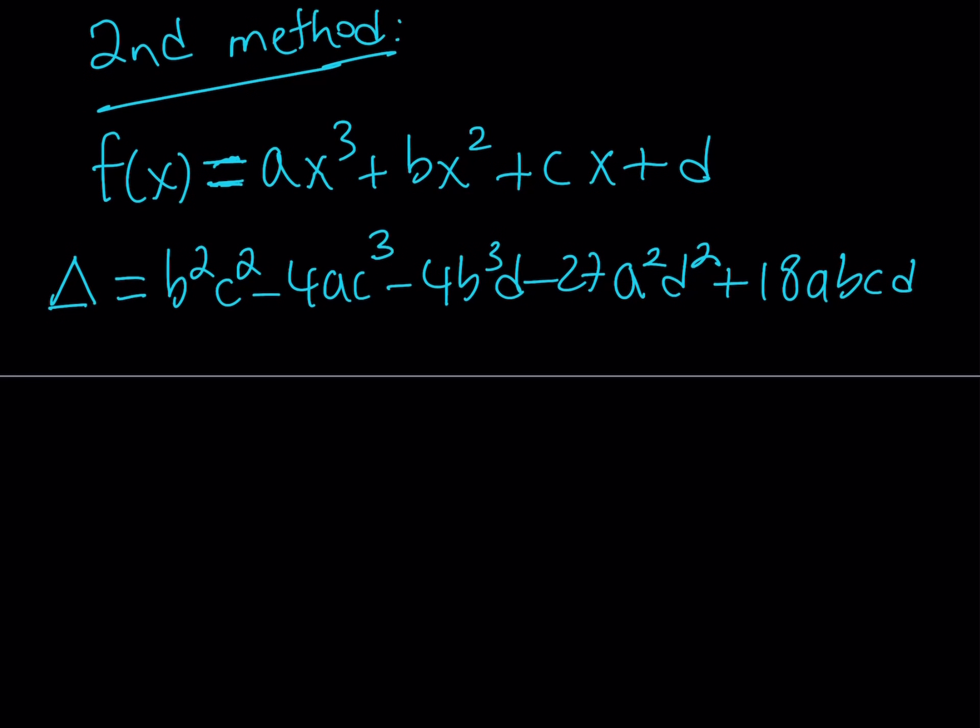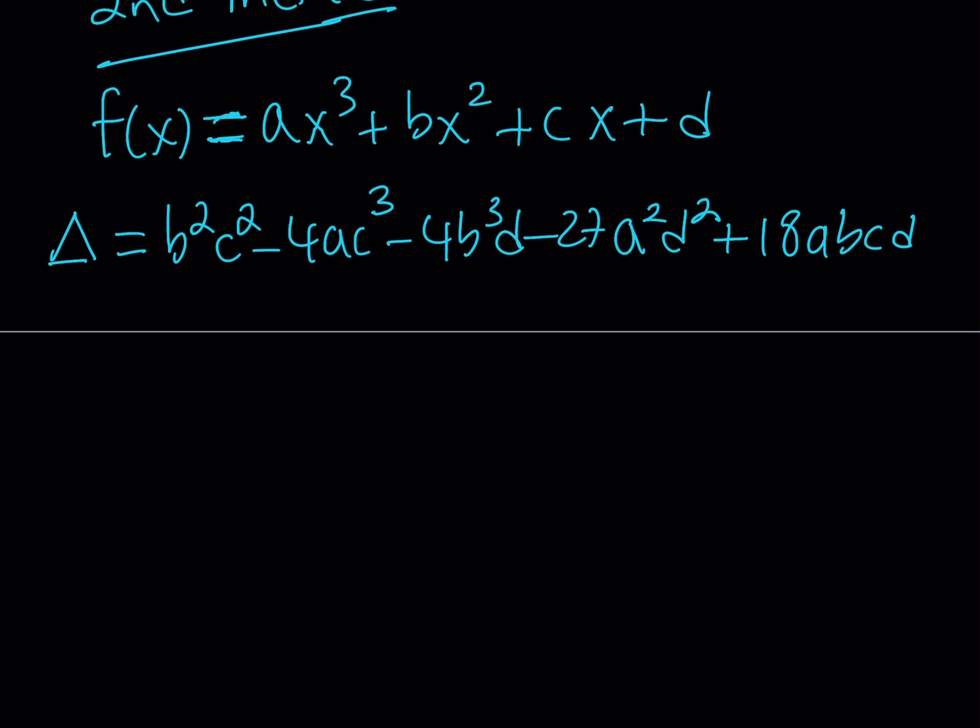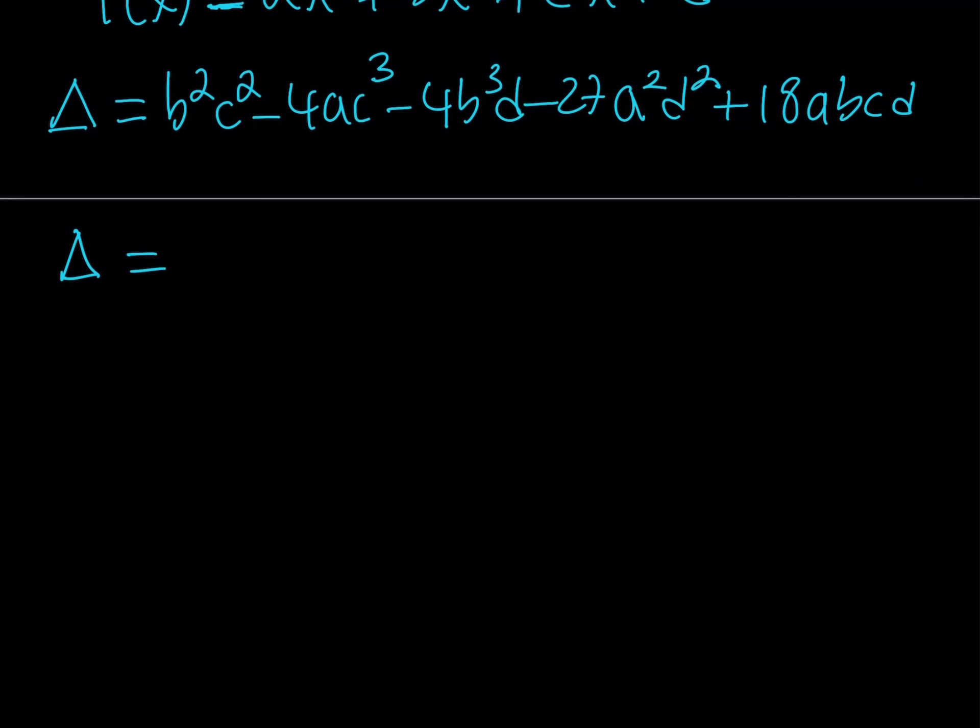I mean what happens if A is equal to zero? We should be getting a quadratic, right? Anyways, you can take a look at it but this is the discriminant. But the discriminant interestingly can also be written in a different way in terms of the roots of the cubic equation. So we can also write it as A⁴(x₁ - x₂)²(x₁ - x₃)²(x₂ - x₃)². The order in which you take these differences don't matter because we're squaring everything and obviously we do have some type of symmetry here.